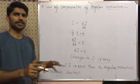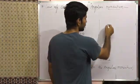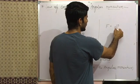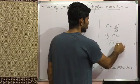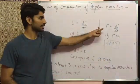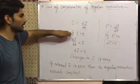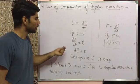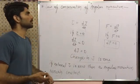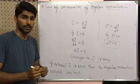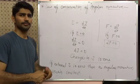This is analogous to the law of conservation of linear momentum. In linear motion, force F = dp/dt; if external force is zero, then dp = 0, so there is no change in linear momentum. Similarly, in rotational motion, when the external torque is zero, there is no change in angular momentum — it remains constant. This concludes the law of conservation of angular momentum.